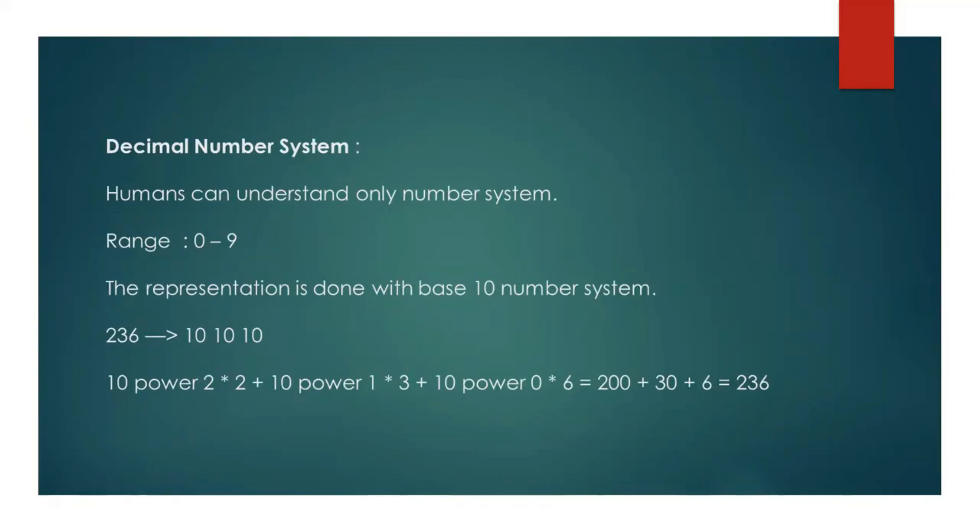Let us understand what are decimal number systems. Humans can understand only number systems in the range of 0 to 9. The representation is done with base 10 number system. 10 power 2 times 2 plus 10 power 1 times 3 plus 10 power 0 times 6 is equal to 200 plus 30 plus 6. When we are reading also, we will say like 230 plus 6: 236. That is what we are representing in the decimal number system.